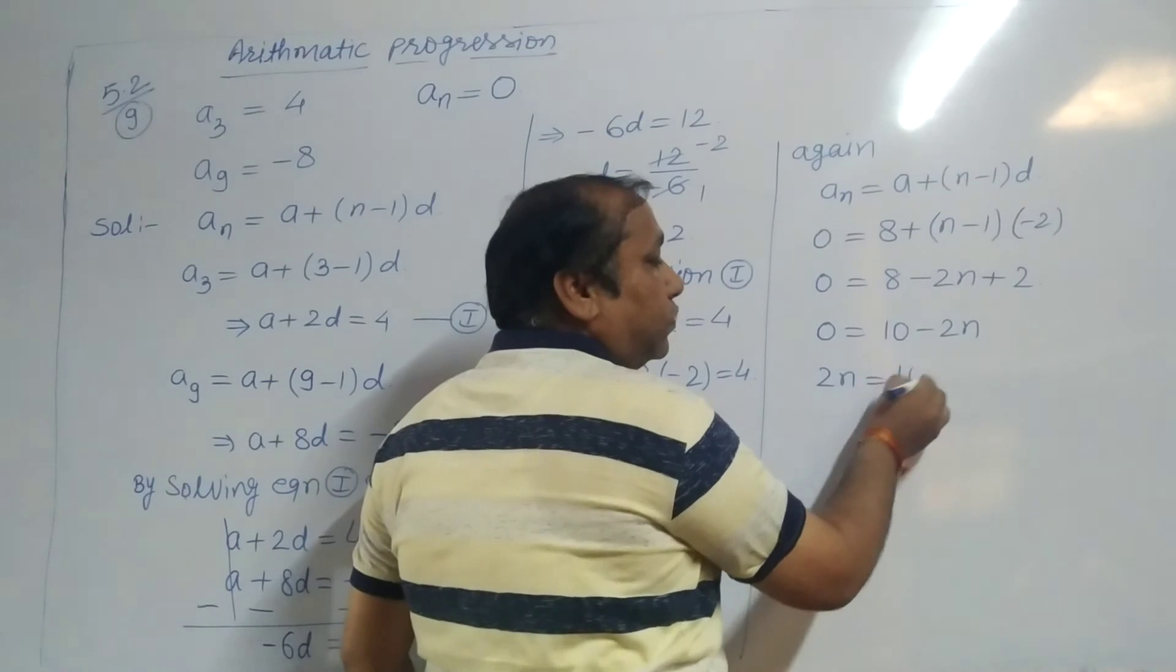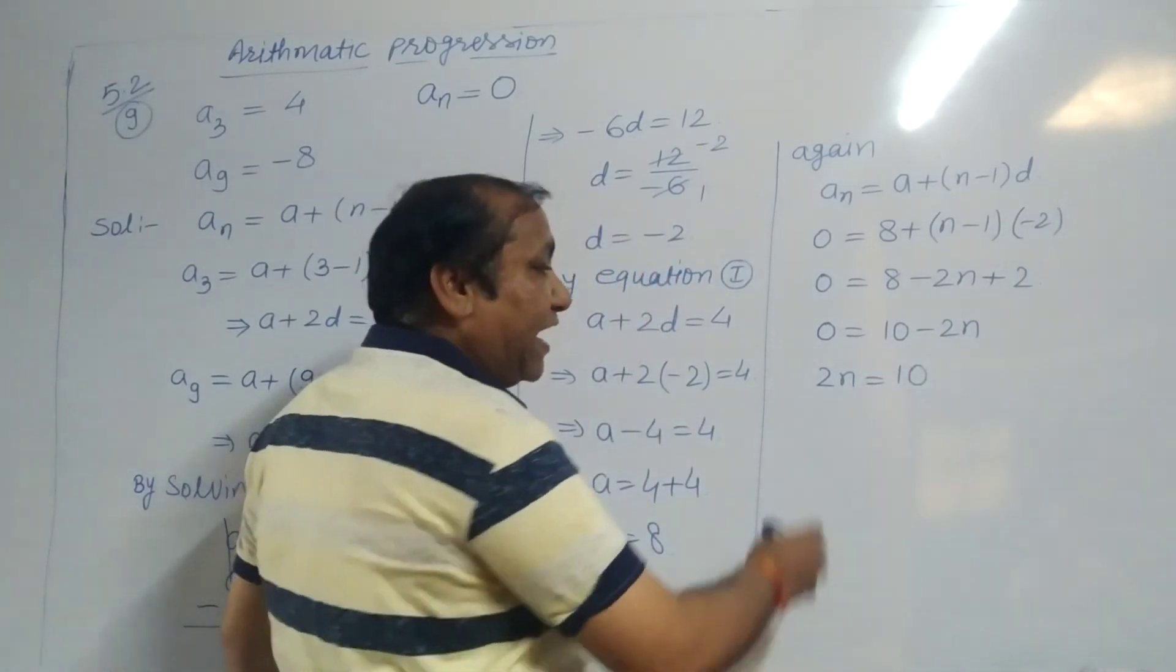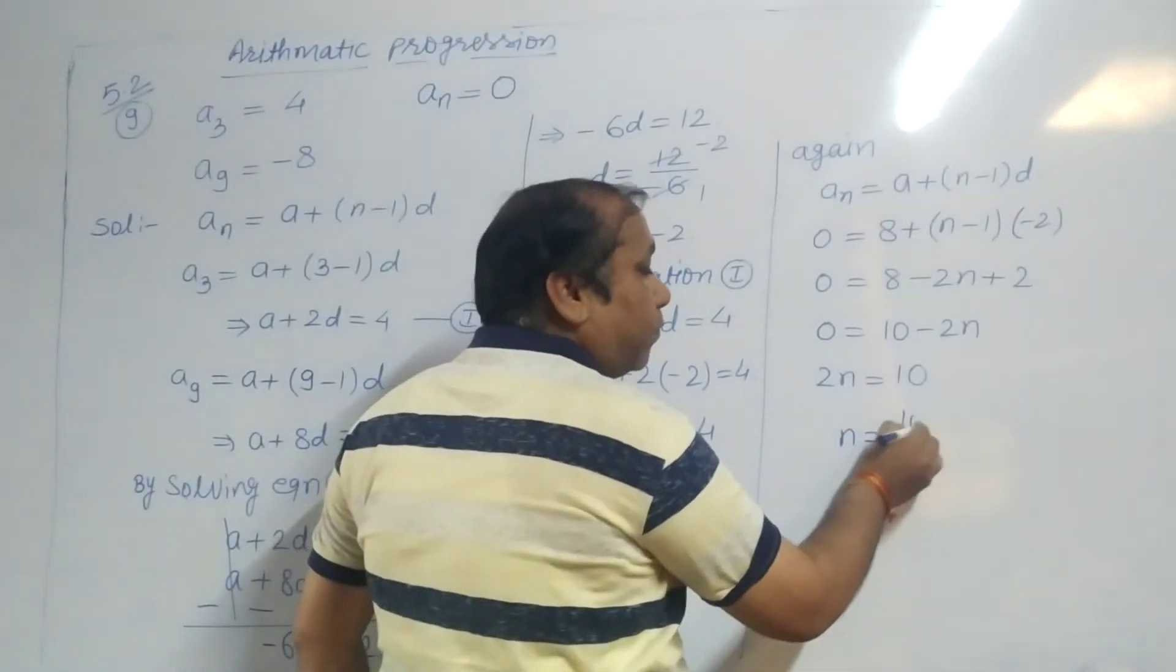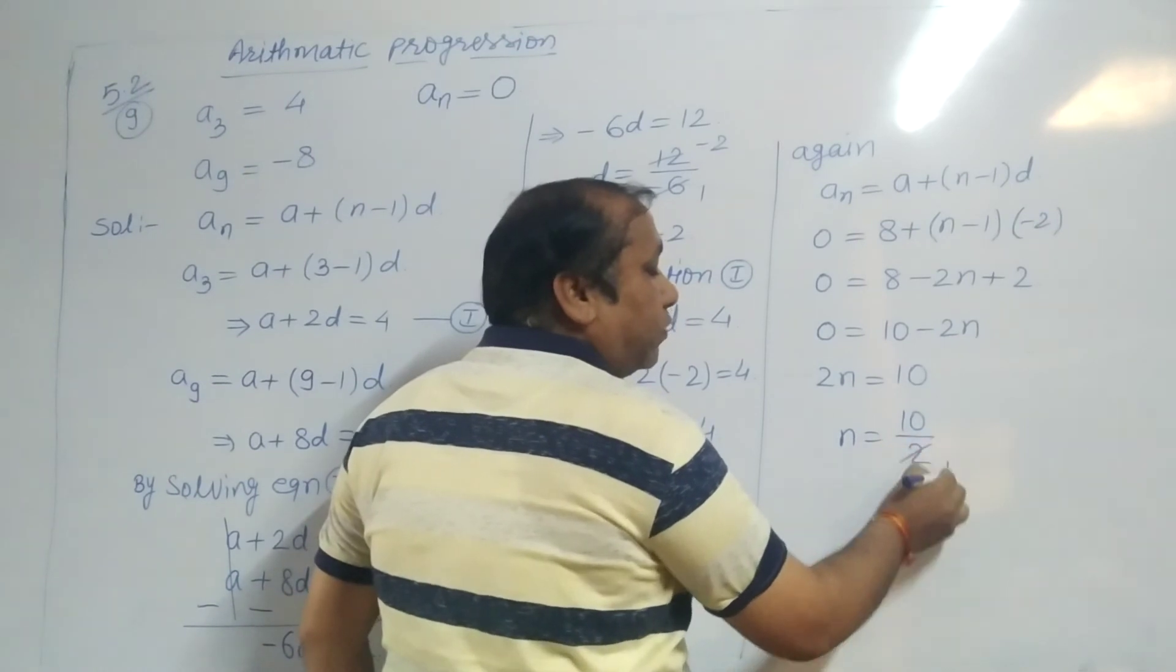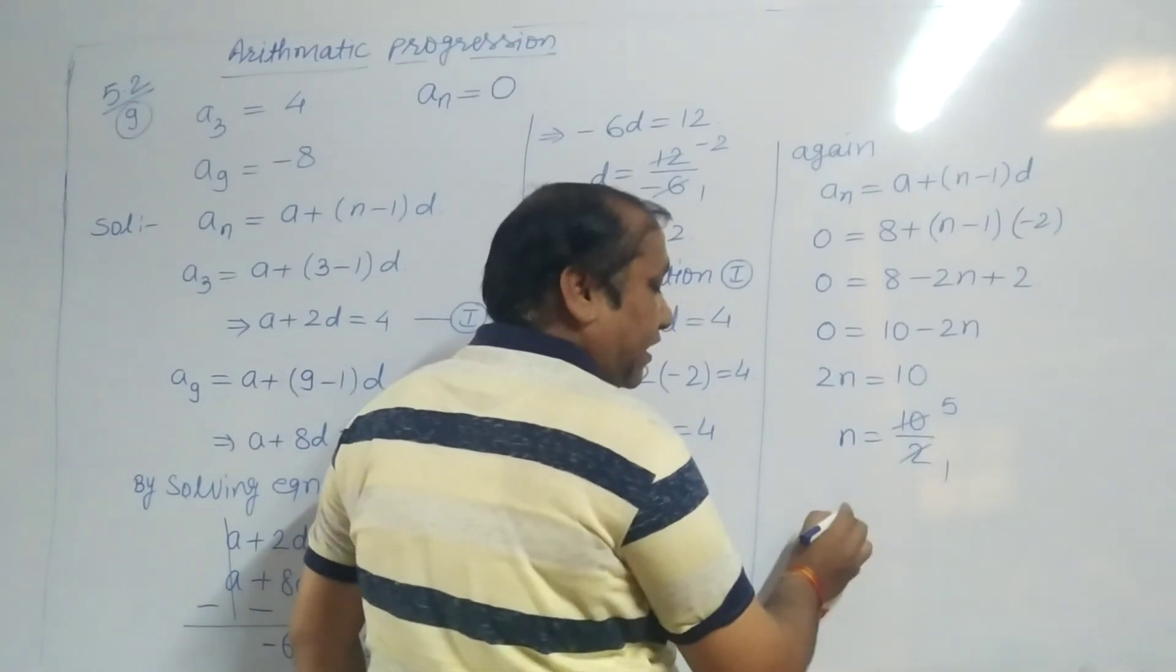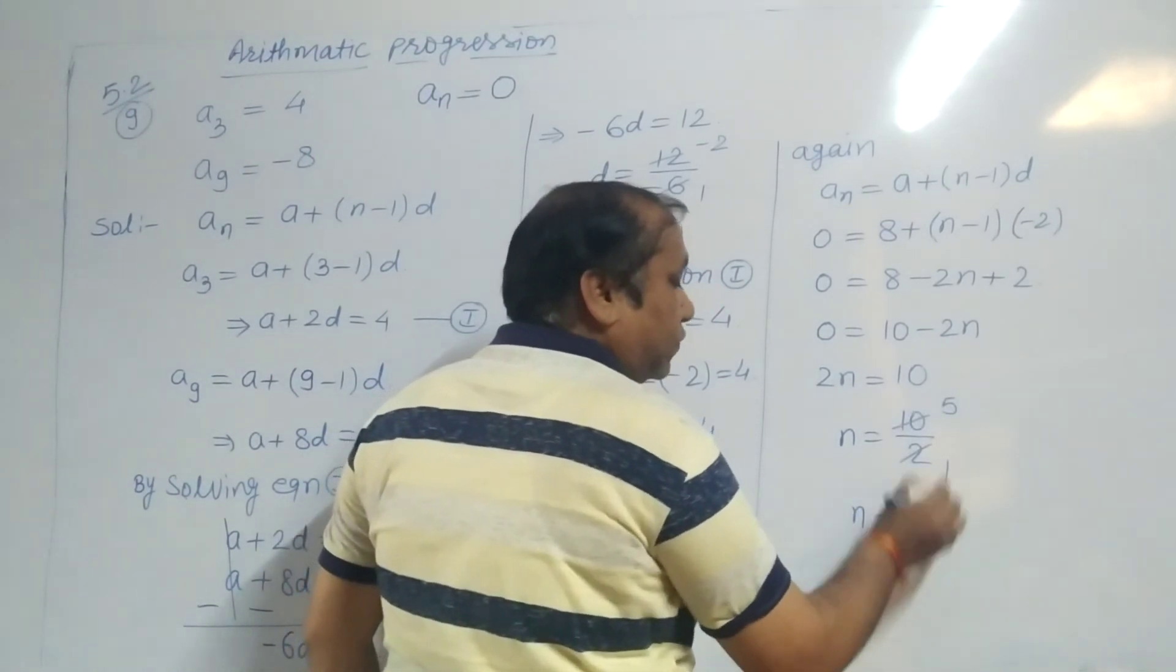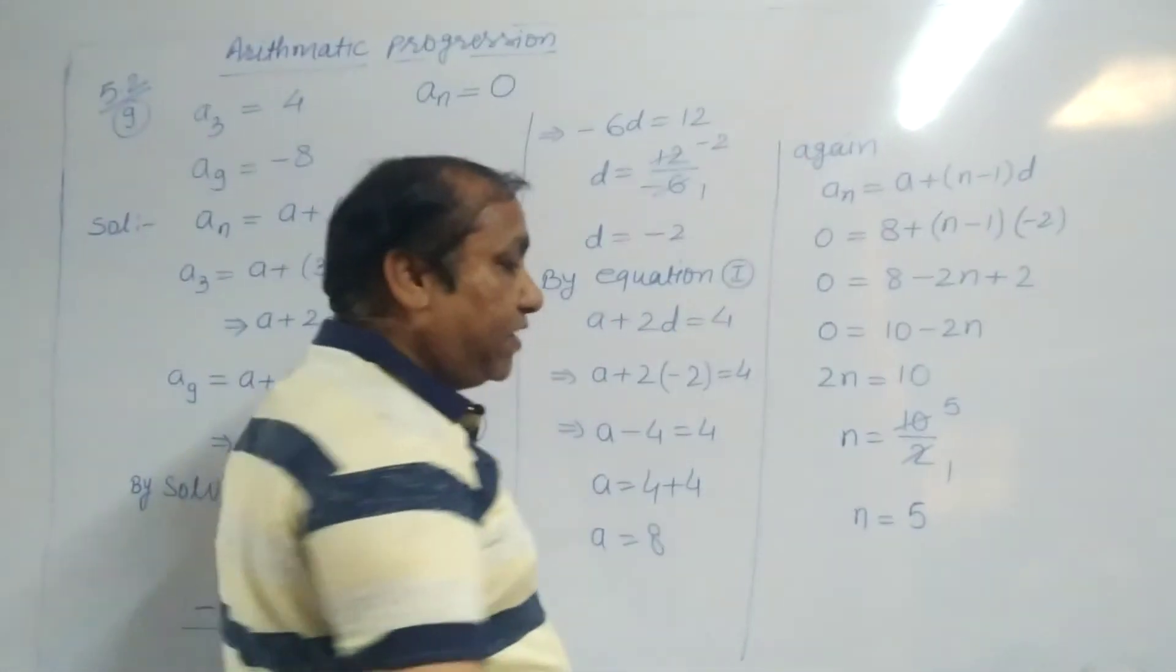Finally, N equals 10 upon 2. So N equals 5. This is our answer.